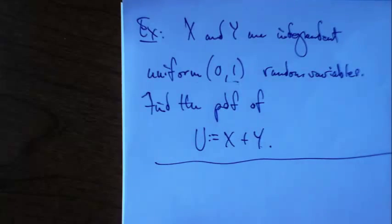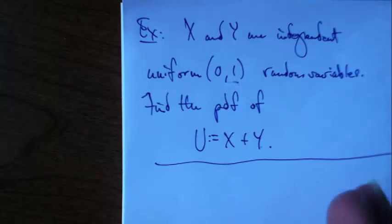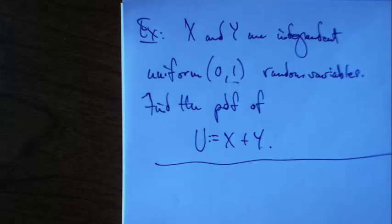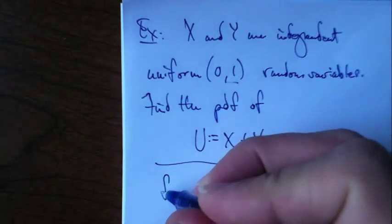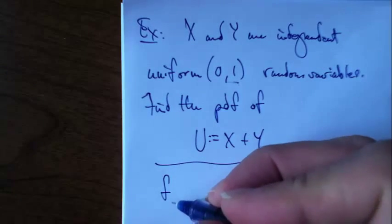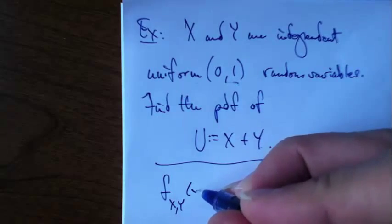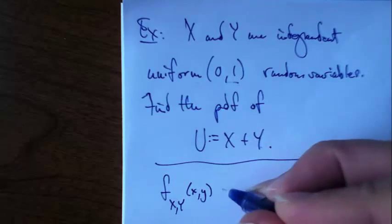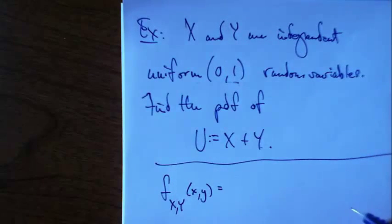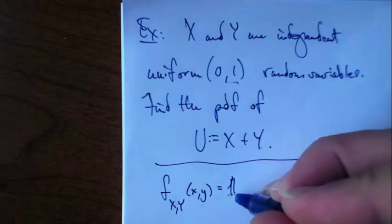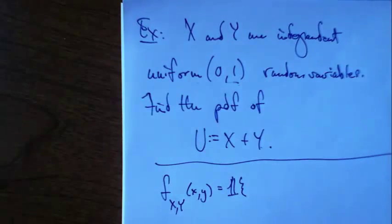I'm going to go through the same steps as I did with the last example, except there's going to be some nuances here. So I'll begin by writing down something I know how to do - I can write down the joint density function for x and y. They're both uniform (0,1) and independent, so it's just the product of their marginals.